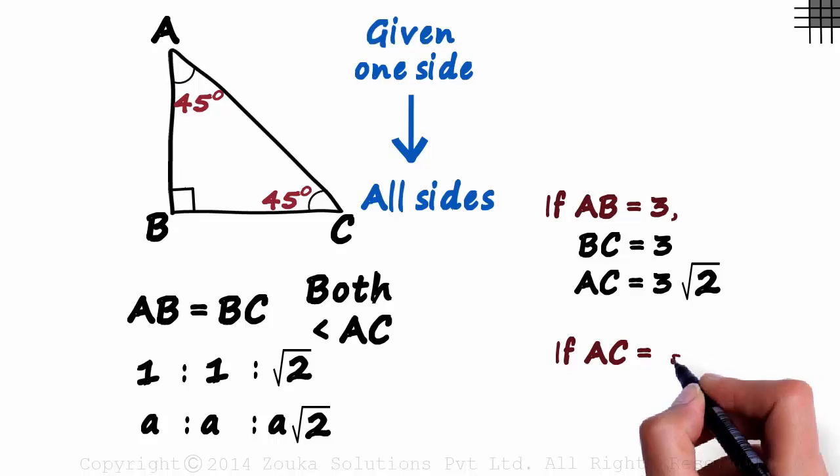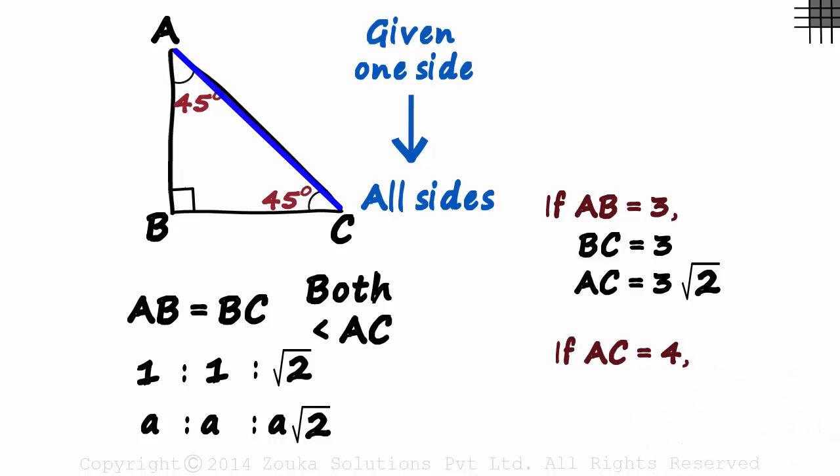Now what if AC is 4? If AC is 4, then AB will equal 4 by root 2. Multiplying a with root 2 gives us a root 2. Multiplying 4 by root 2 with root 2 gives us 4.